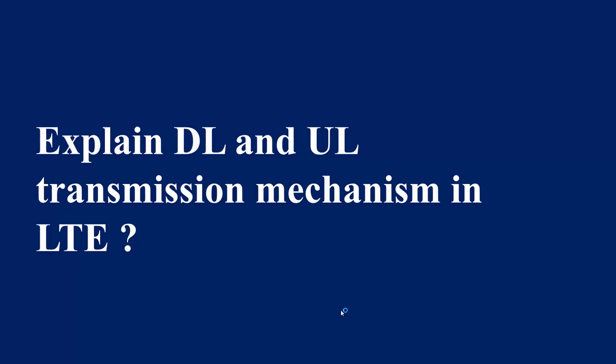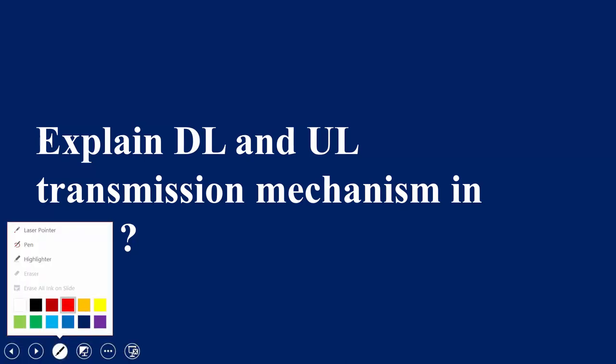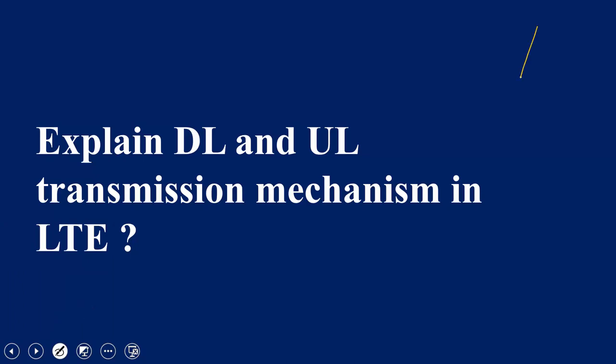One of the gentlemen in the course asked: explain uplink and downlink transmission mechanism in LTE. That's a great question, because if you have worked on previous technologies it makes sense to understand why we are choosing something different in LTE. Ultimately we are talking about wireless, and in wireless everything is in the air — so if this is your eNodeB and this is the UE, when data is coming in the downlink how is it arriving, and when data is going in the uplink how is it going, and what is the transmission mechanism?